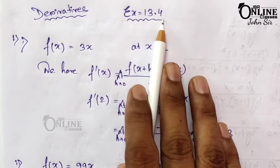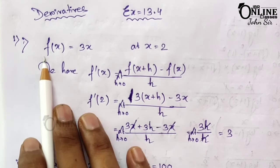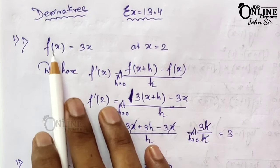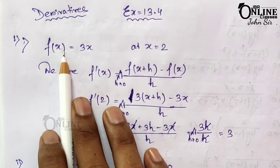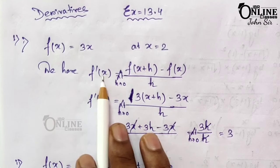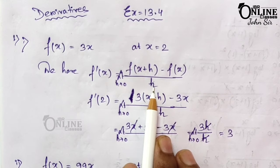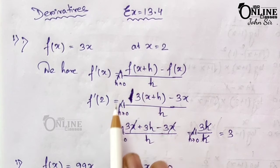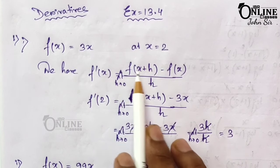Now I am going to solve exercise 13.4 from the book of Emela Garbal. In question number 1, using definition, find the derivative of the following function at the indicated points. Here f(x) = 3x at x = 2; you have to find out f'(x). As we know, the definition of f'(x) equals limit h tends to zero of [f(x+h) - f(x)] / h. You have to write down this formula in each and every problem.